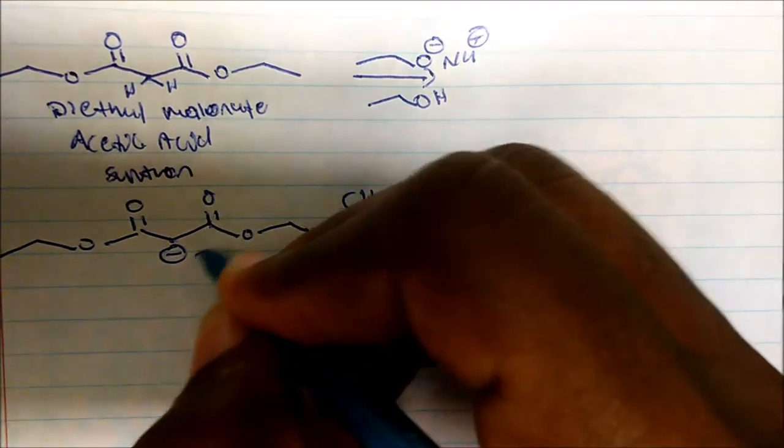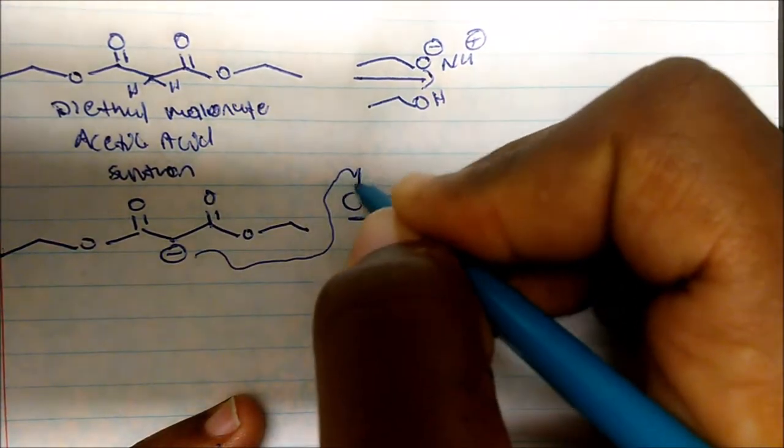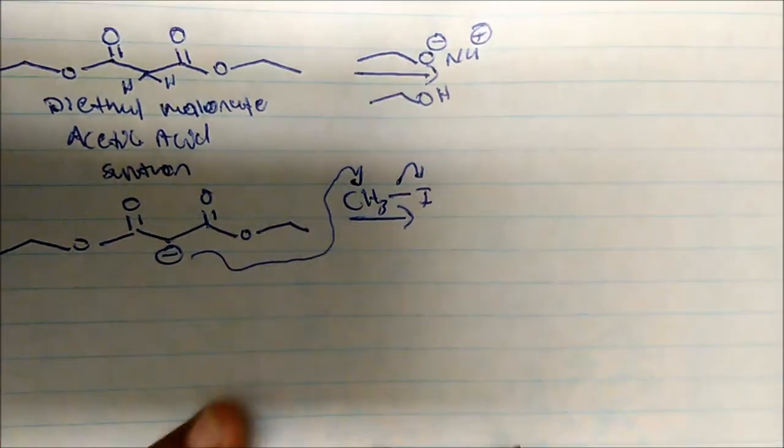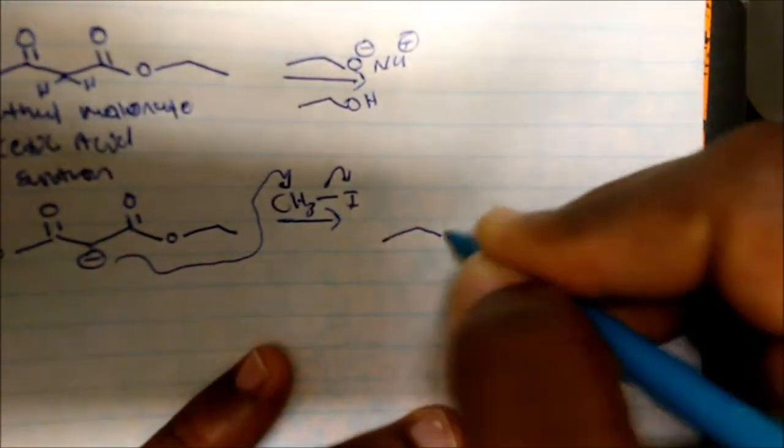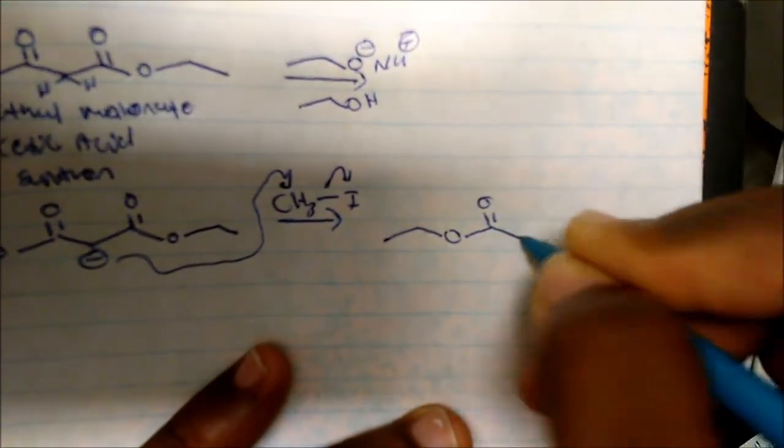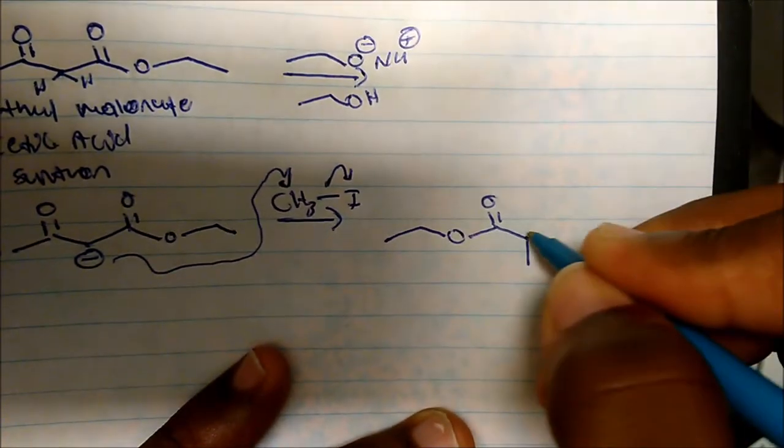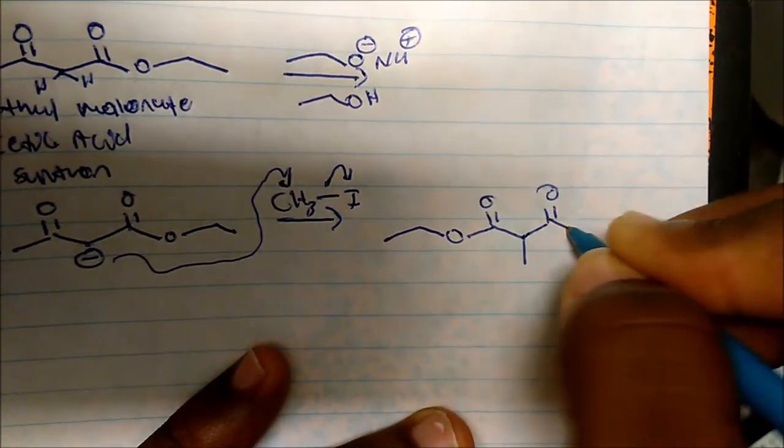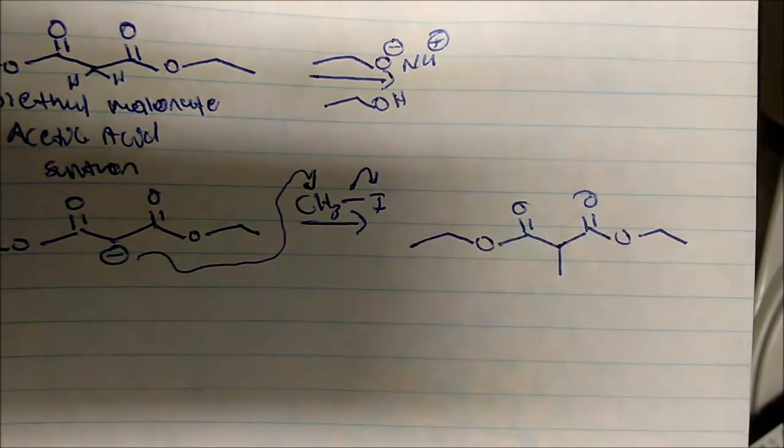It's just attack. So it does an SN2 attack on the carbon and displaces the iodine. And when that happens, here's what we form. We form the CH3 group there, and we still have this whole group here.